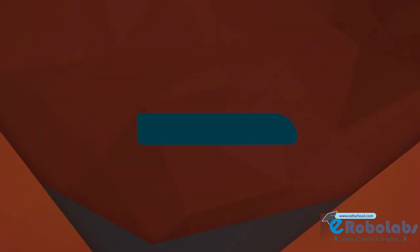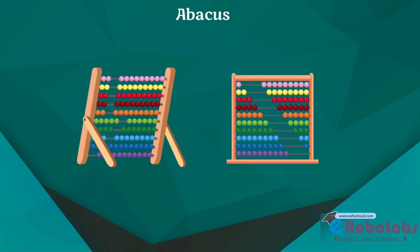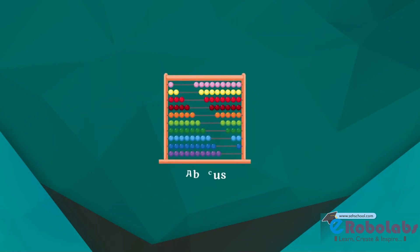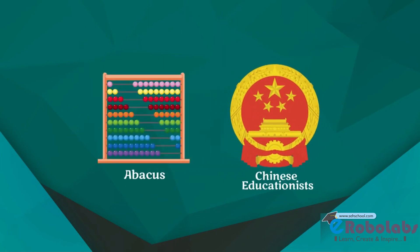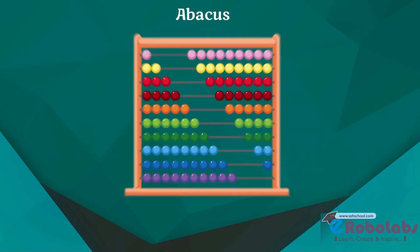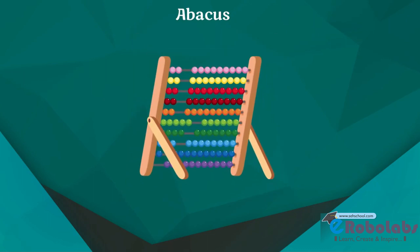The Abacus is known to be the first mechanical calculating device, which was used to perform addition and subtraction easily and speedily. This device was developed by the Chinese and has been in use since 500 BC. Abacus is made up of a wooden frame in which rods were fitted across with round beads sliding on the rods. It is divided into two parts, called heaven and earth. Heaven was the upper part and earth was the lower one. Thus, any number can be represented by placing the beads at the proper place.